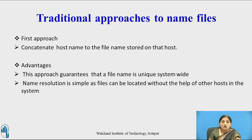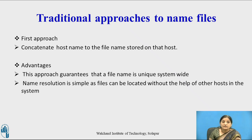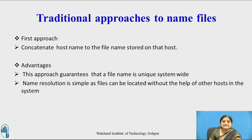The first approach is to concatenate the host name to the file name stored on that host. You are using the physical location of the file — the host name — and concatenating it to the file name stored on that host. The advantages of this approach: it is very easy to implement. It assures that a file name is system-wide unique because the host name of every computer, that is its IP address, is unique. Name resolution is also simple, as files can be located without the help of other hosts in the system.